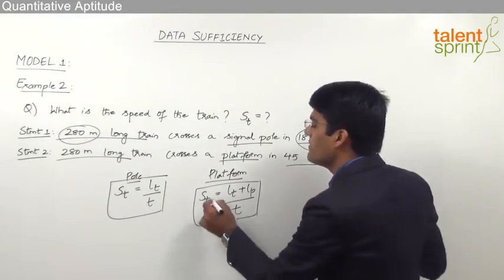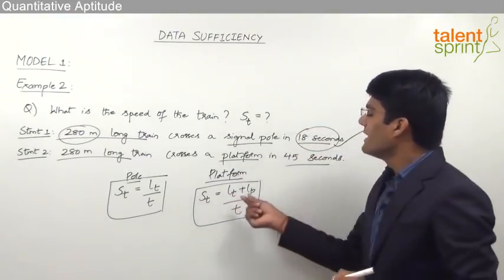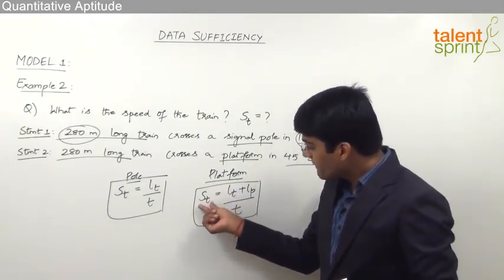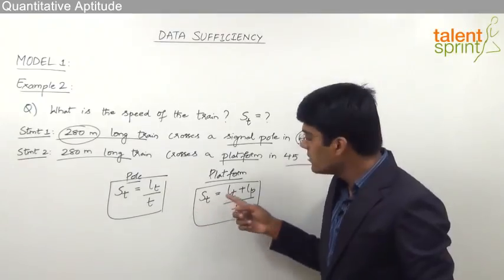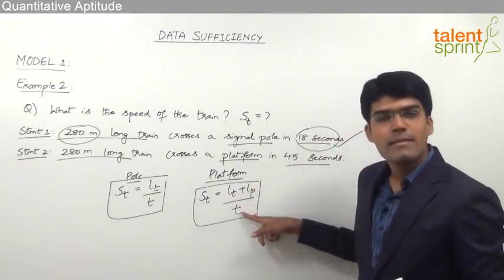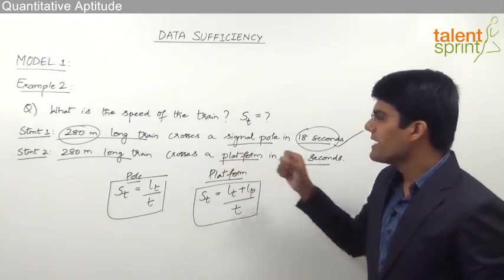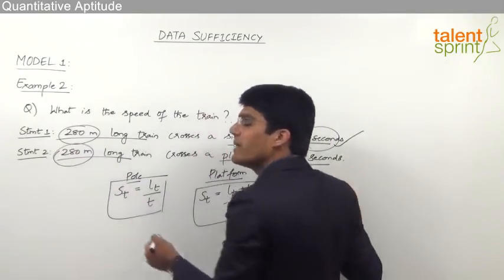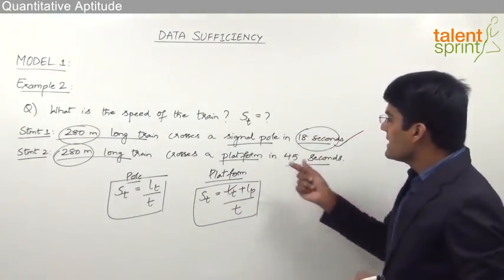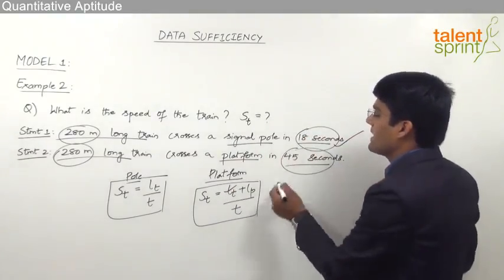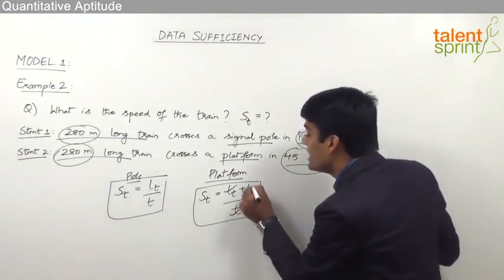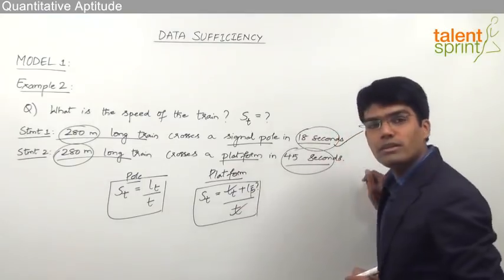When the train crosses a platform, its speed equals (length of the train + length of the platform) ÷ time. To find the speed, we need three variables: length of the train, length of the platform, and the time taken. From Statement 2, the length of the train is 280 meters and the time is 45 seconds, but the length of the platform is not given.